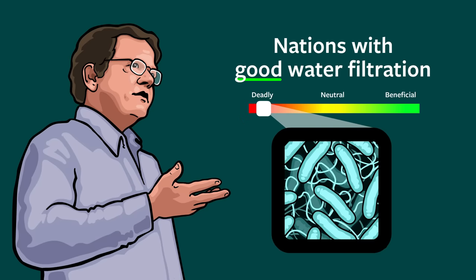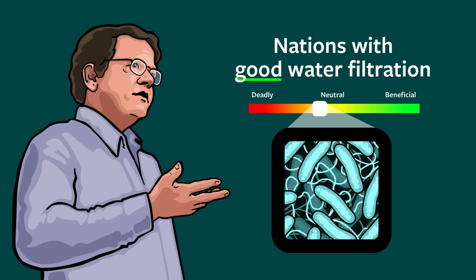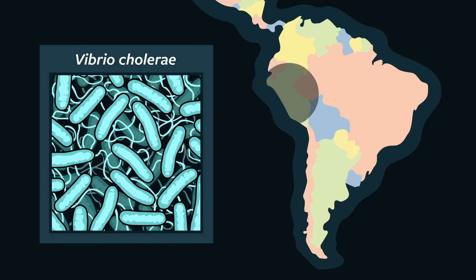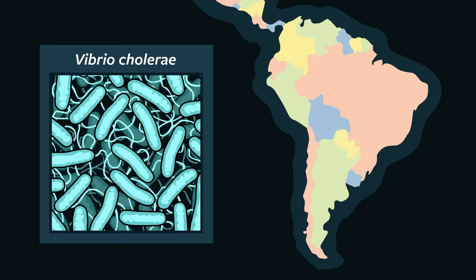In countries with good water filtration, strains of the bacteria evolved toward commensalism. In these environments, natural selection favored microbes that were kinder to people, because people were then healthy enough to go to school, to work, and mingle with friends and family — allowing the bacteria to spread slowly and non-violently through human-to-human contact. The take-home message: when there is an outbreak of cholera, not only should we immediately treat the sick, we should also distribute clean drinking water. Doing so will guide the bacteria's evolution in a direction that's good for the future of the people in the area.